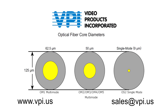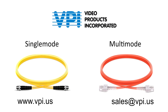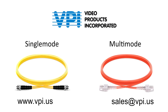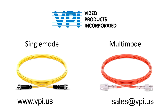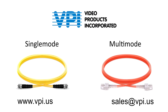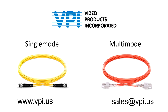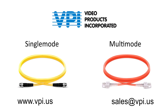50-micron cables provide longer length distance and higher speeds than 62.5-micron cables. Single-mode cables have theoretically unlimited bandwidth, whereas multi-mode cables have a limited bandwidth, with 50-micron cables providing three times the bandwidth of 62.5-micron cables.